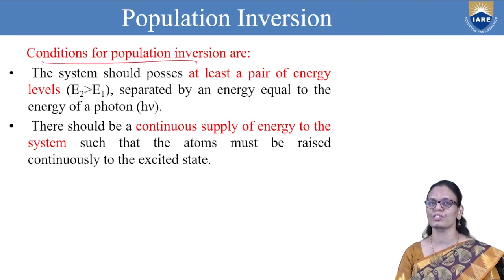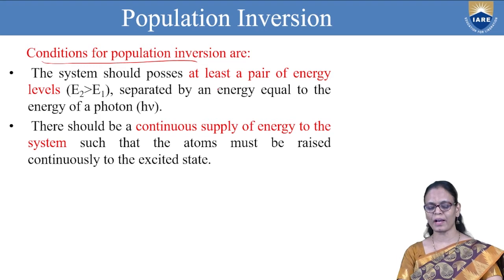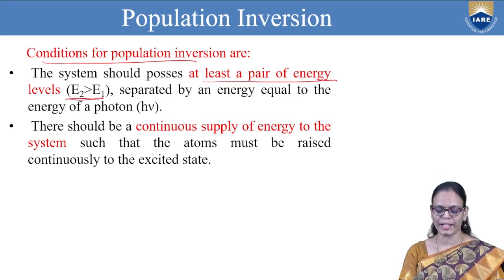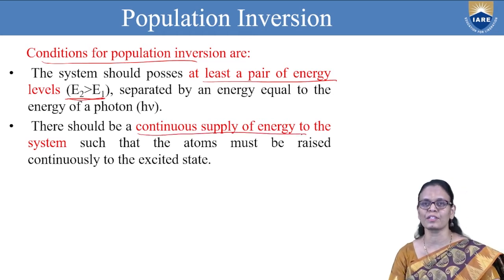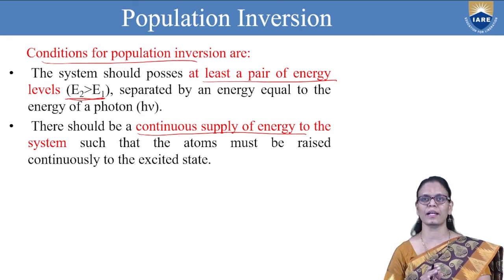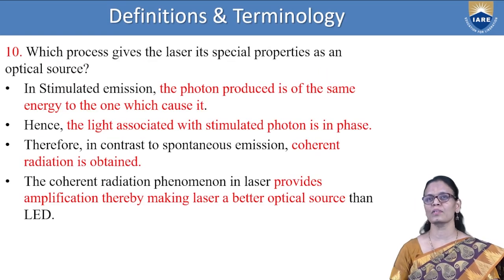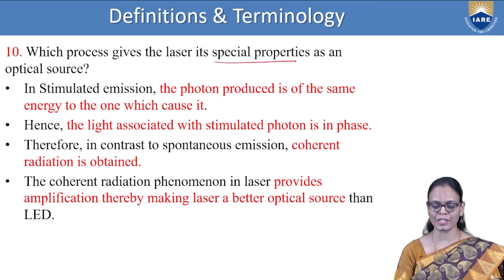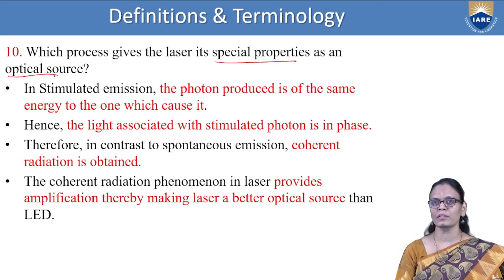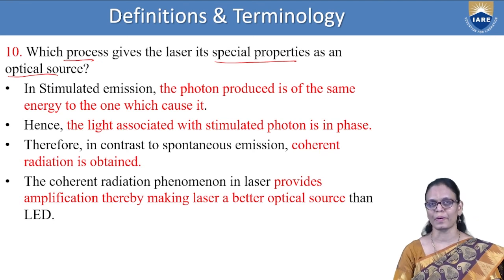What are the conditions for population inversion? The system should have at least a pair of energy levels such that one is greater than the other, and there must be a continuous supply of energy to the system. When you supply energy, the atoms get excited and go to the excited state. In stimulated emission, the photons produced are of the same energy as the one which causes it — the incident photon and the emitted photon have the same energy.